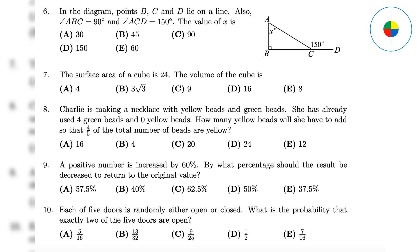Question 8: One-fifth of the beads are green, which is 4. So, the total beads should be 20, and the answer is 20 minus 4, which is 16.